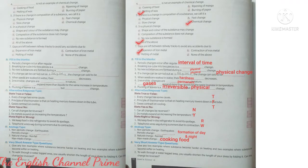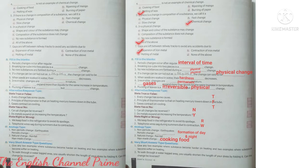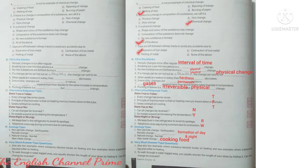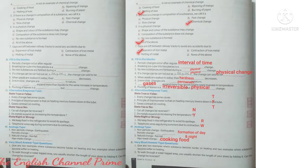Seventh question: Gaps are left between the railway tracks to avoid any accidents due to? Yes, it is expansion of the iron metal — that is option A. We have already discussed this with examples.